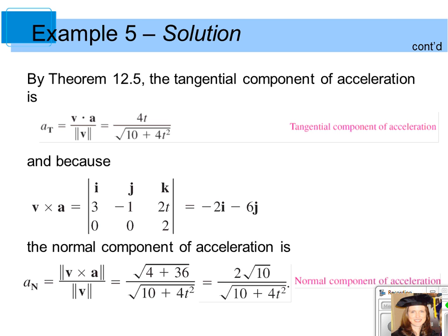So we have our formulas for both the tangential and normal components of acceleration. We can substitute in the given time to get the scalar values, the single number values, which would be those components.